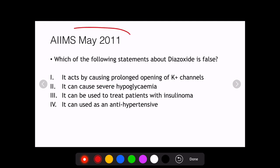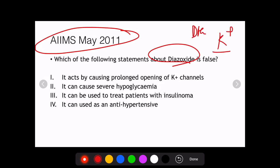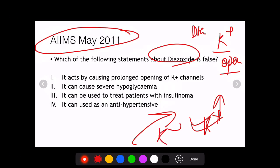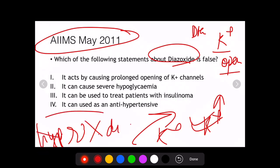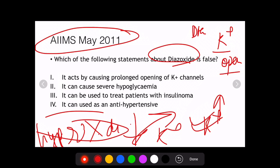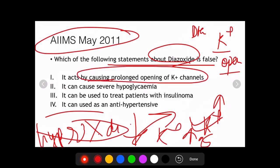A similar question was asked in AIIMS May 2011 about diazoxide. Diazoxide causes prolonged opening of potassium channels rather than closing them. When potassium channels are open, more potassium flows out of the cell, causing hyperpolarization instead of depolarization. Hyperpolarization in turn decreases insulin secretion, leading to hyperglycemia.